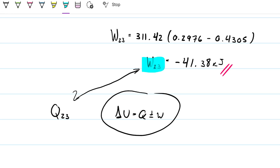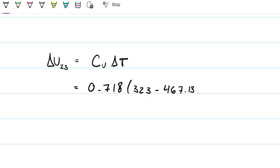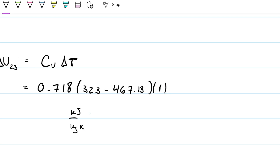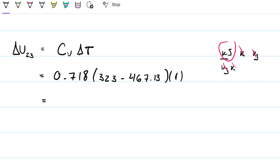To get ΔU from 2 to 3, I'll use CV times ΔT. CV is 0.718 kilojoules per kilogram·Kelvin. The temperature is actually decreasing from 2 to 3, so T3 is 323 Kelvin and T2 is 467.13 Kelvin. Multiplying through with one kilogram, the units work out to kilojoules, and I get an internal energy change of negative 103.4 kilojoules — confirming the internal energy has decreased.